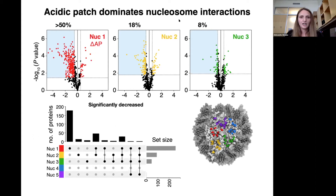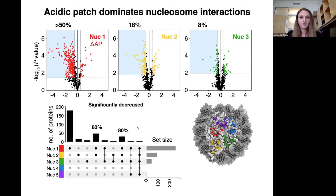To understand how many proteins overlap between these three hotspots, we generated an upset plot, where we can see unique proteins that are significantly decreased for each of the hotspots. We can also see unique proteins that are shared between two hotspots, and proteins that are shared between all three hotspots. Not surprisingly, acidic patch has the most number of unique binders. However, what is interesting is that 80% of proteins that recognize patch 2 also recognize acidic patch, and 80% of proteins that recognize patch 3 also recognize patch 2 and acidic patch, indicating rather multi-patch dependence that is primarily driven by the acidic patch.